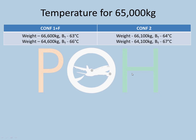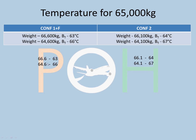We need to find values for 65,000 kg. The temperatures given in the boxes were for different weights, but we need them for the actual takeoff weight of 65,000 kg. I have noted: 66,600 kg — box temperature 63; 64.6 — box temperature 66. Config 2: 66.1 — box temperature 64; 64.1 — box temperature 67. What we are going to do is find for 65 tons through interpolation.